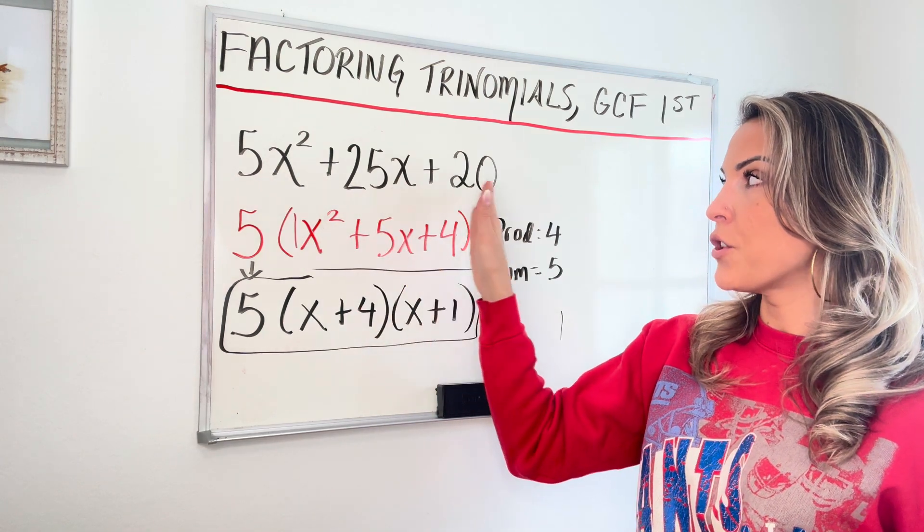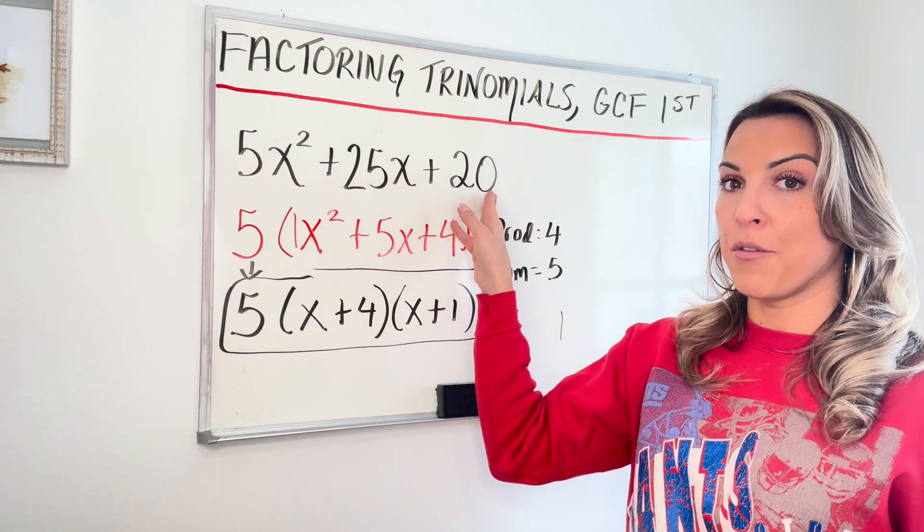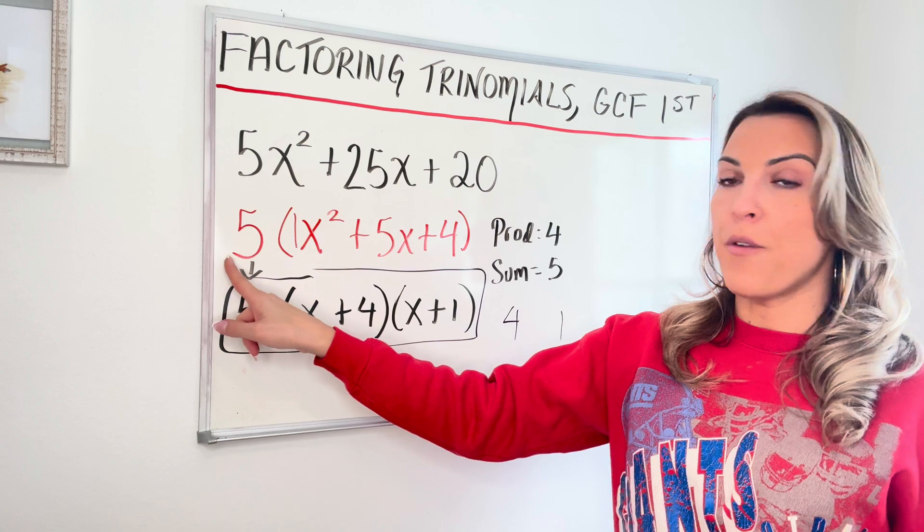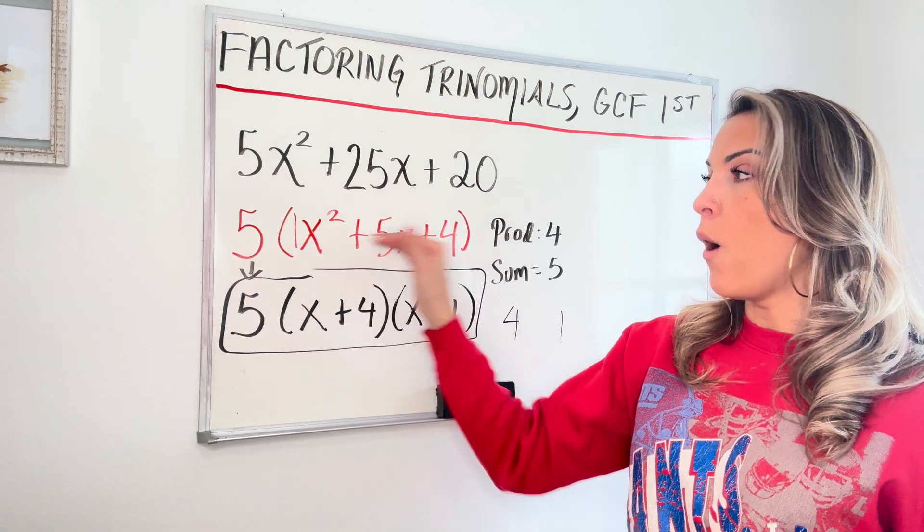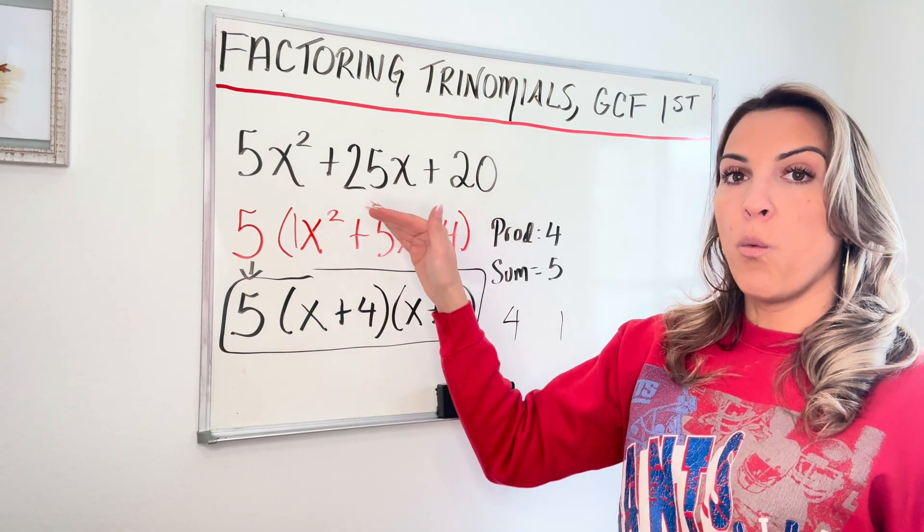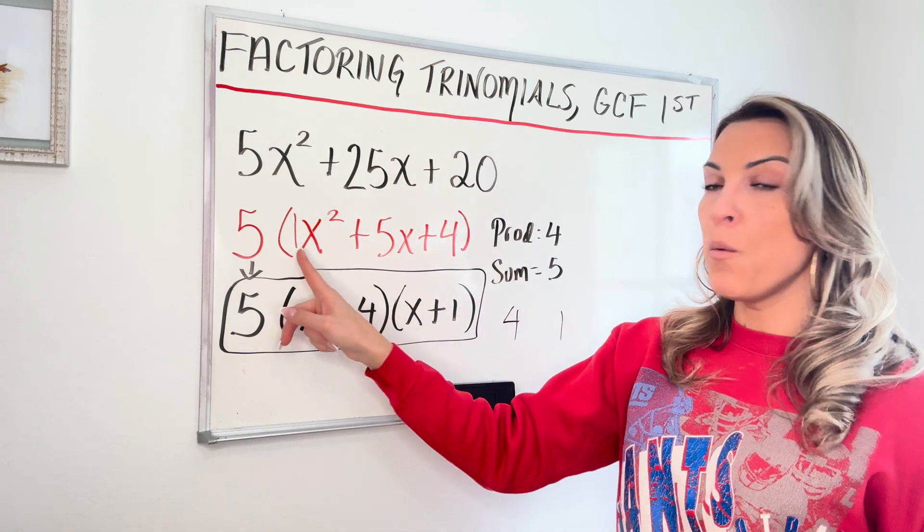So to recap, we first looked at all the terms and saw, was there a GCF that I could factor out? There was, we factored out that five and what we were left with in red in the parentheses was a trinomial where A was one.